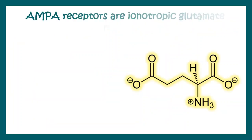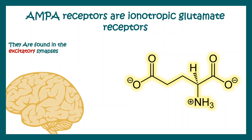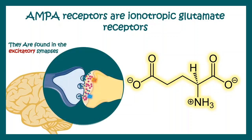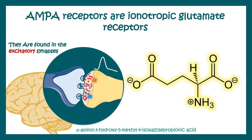AMPA receptors are one type of ionotropic glutamate receptor found in excitatory synapses, where they regulate post-synaptic potentials. AMPA stands for alpha-amino-3-hydroxy-5-methyl-4-isoxazolepropionic acid — quite a mouthful. This compound is abbreviated as AMPA and acts as an agonist for this receptor. The receptor is named after its agonist.